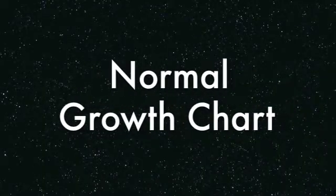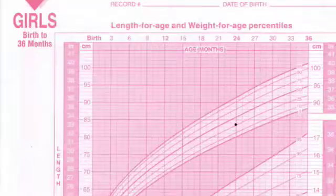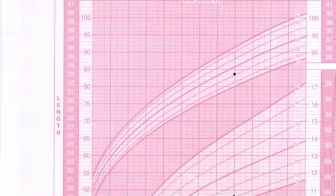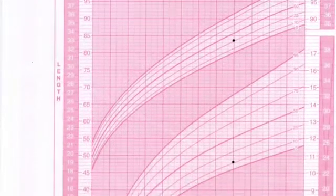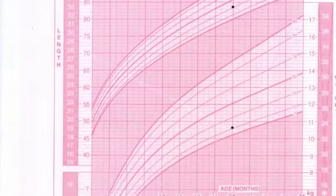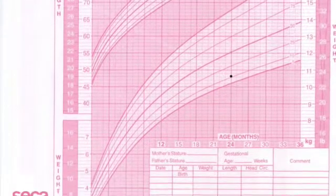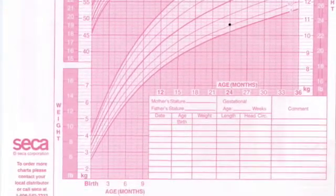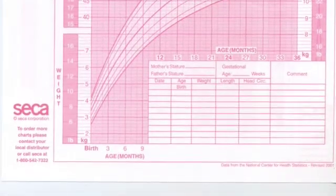Now we are going to show you an example of a normal patient's growth chart. As you can see in this example, the marks for height and weight both fall within normal range. Normal range is the lighter area on the chart. Most people, however, do not fall within normal range.